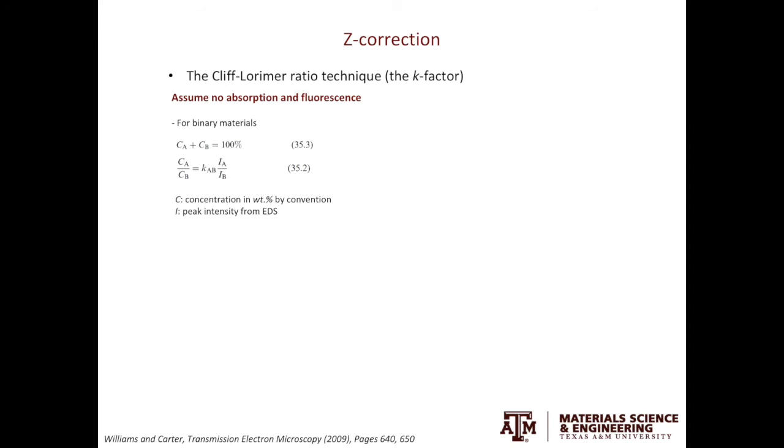Here C is the concentration. It is in weight percent by convention. I is the peak intensity from EDS. KAB is the K-factor. You can also extend it into a ternary system. The same relationship holds.